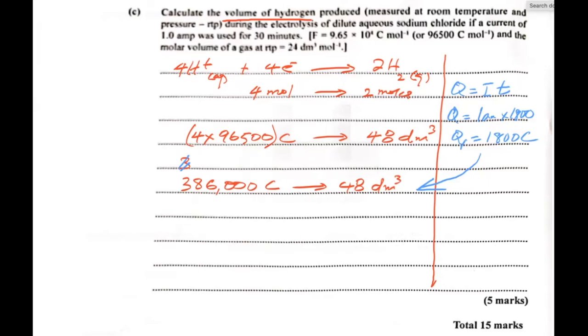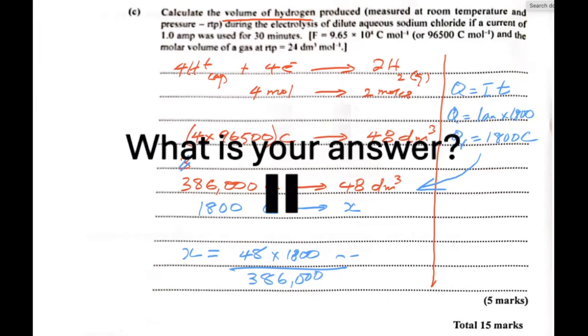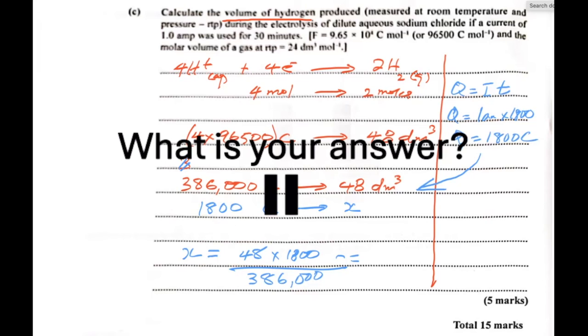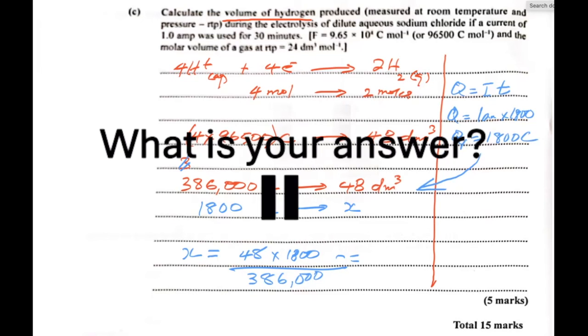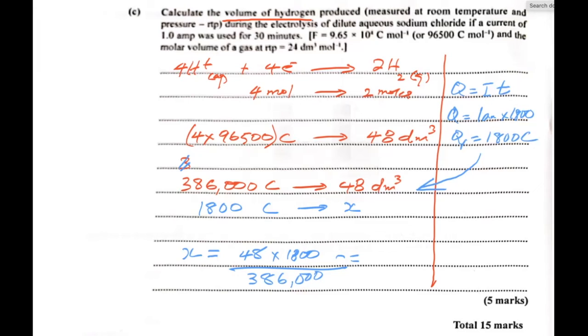So we said 386,000 coulombs produce 48 dm cube of hydrogen. So if it were 1800 coulombs, what volume would we be getting? So here we're solving for X. X is equal to 48 times 1800 divided by 386,000, which is 0.22 dm cubed.